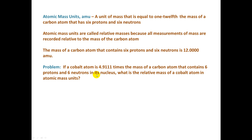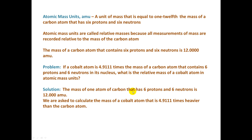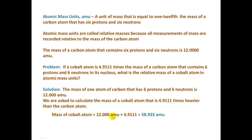Let's try a problem. If a cobalt atom is 4.9111 times the mass of a carbon atom that contains 6 protons and 6 neutrons in its nucleus, what is the relative mass of a cobalt atom in atomic mass units? The mass of one carbon atom with 6 protons and 6 neutrons is 12 atomic mass units. The mass of the cobalt atom is 12 atomic mass units times 4.9111, which equals 58.933 atomic mass units. So the cobalt atom has a relative mass of 58.933 atomic mass units.